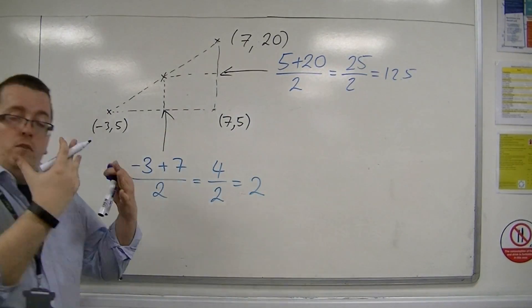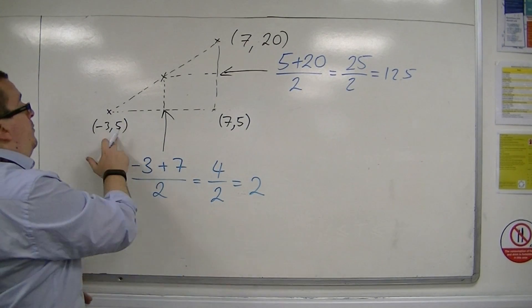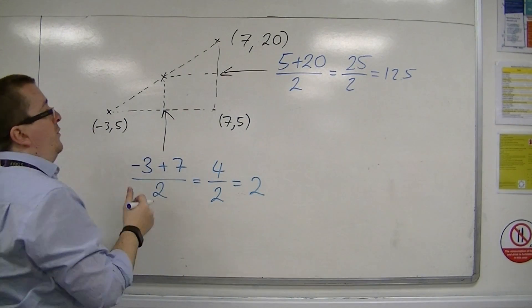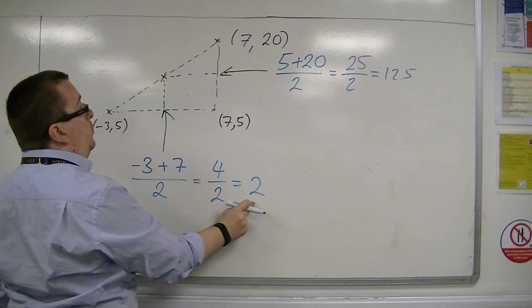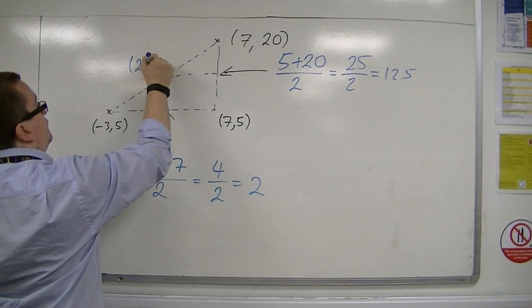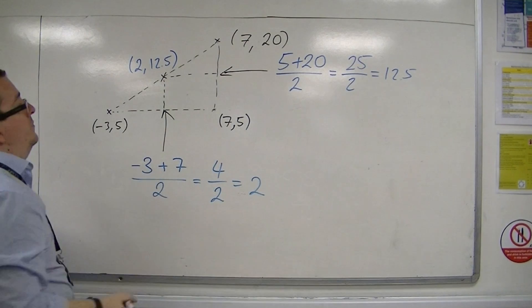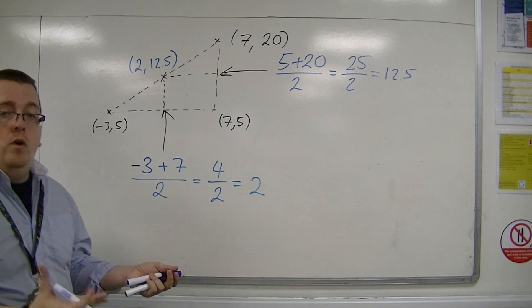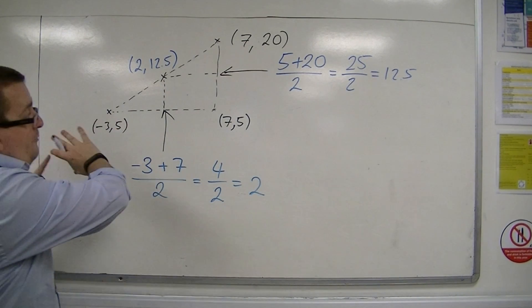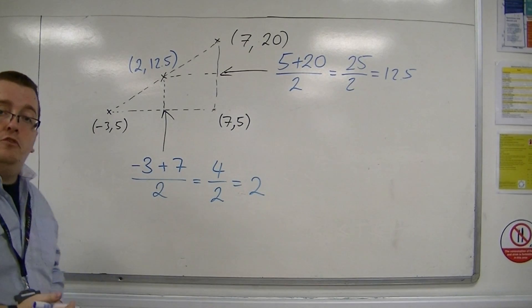So I can say that the coordinates of the midpoint between minus 3, 5 and 7, 20 is 2, 12.5. So that's how we can work out the midpoint, and feel free to draw yourself a little diagram when doing it.